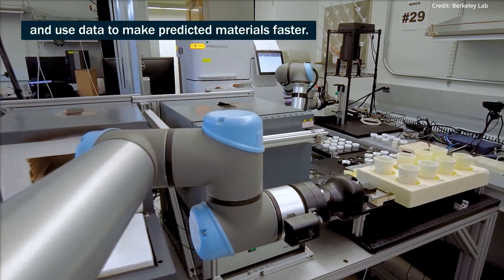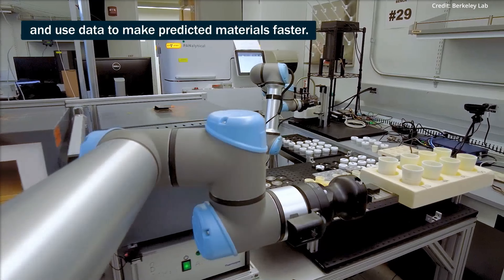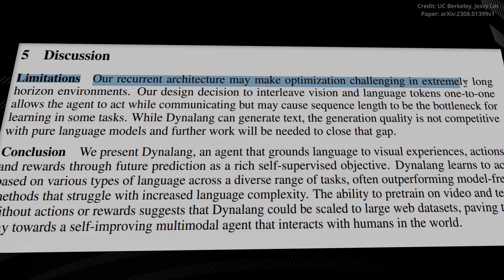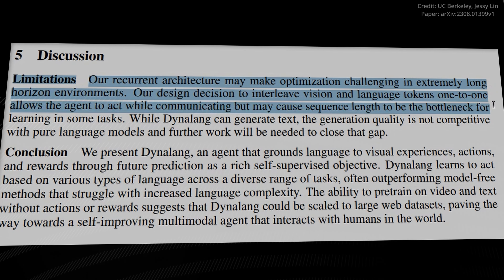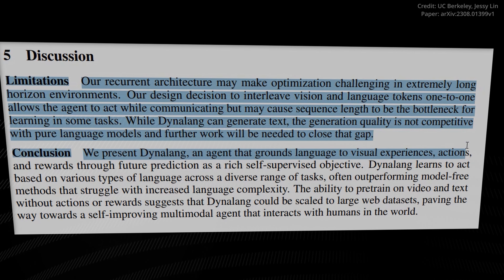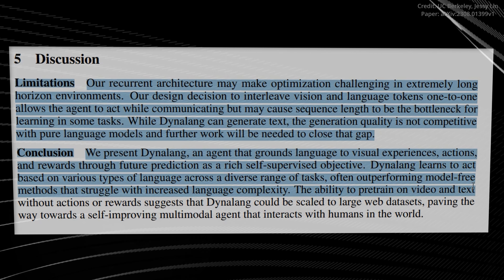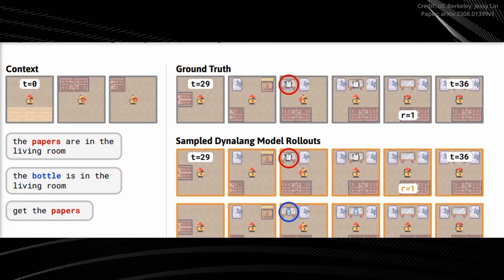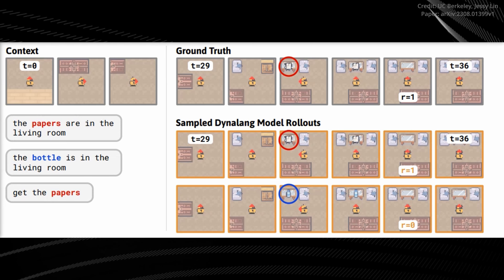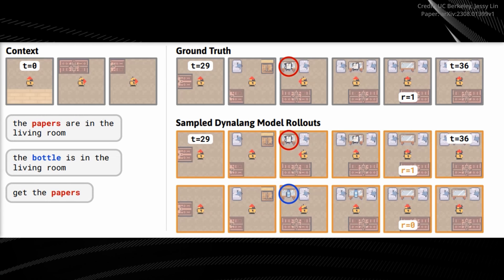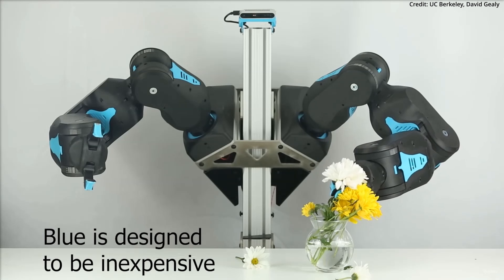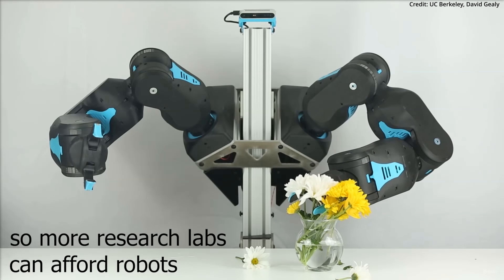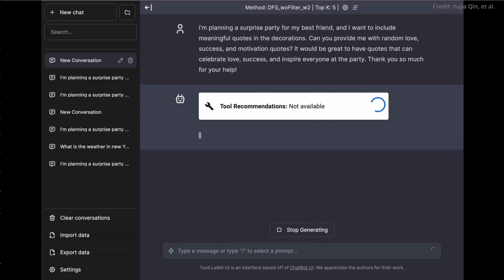The agent can also generate texts and read manuals to learn new games. In one particularly intriguing experiment, the researchers trained Dynalang using a petite dataset of short stories, which resulted in a marked improvement in the agent's performance. Even more impressively, Dynalang is also capable of being trained with offline data without any actions or rewards, meaning the agent can learn from textual and video data even if it wasn't deliberately collected during its environmental exploration.